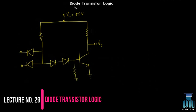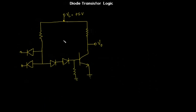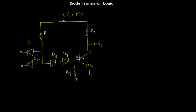Welcome to the lecture on diode transistor logic. In this circuit diagram we have four diodes: D1, D2, D3, and D4, and three resistors. R1 is connected to the power supply, R2 is also connected to the power supply, and R3 is connected to the base of transistor T. This transistor T has a base, a collector, and an emitter. Since we have diodes and transistors in the circuit, we call it diode transistor logic.